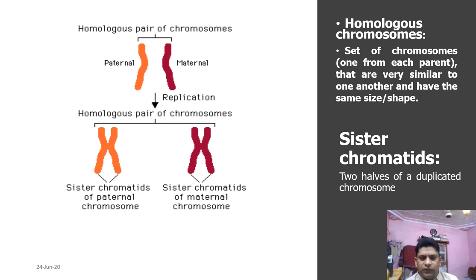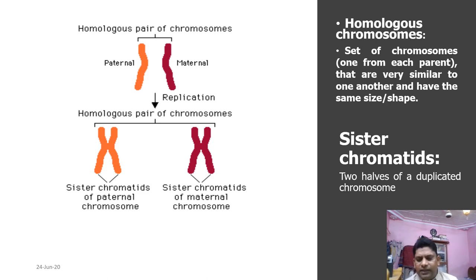Another very important term to discuss is homologous chromosomes. Homologous chromosomes are the pair of chromosomes in which one comes from the father, known as paternal, and one comes from the mother, known as maternal. After replication, two homologous chromosomes may contain two sister chromatids each — the paternal and the maternal sets. Homologous chromosomes are chromosomes of the same size, same shape, and may contain similar types of genes at the same locus. Sister chromatids are the two chromatids of the same chromosome, both being sister chromatids of one parent.